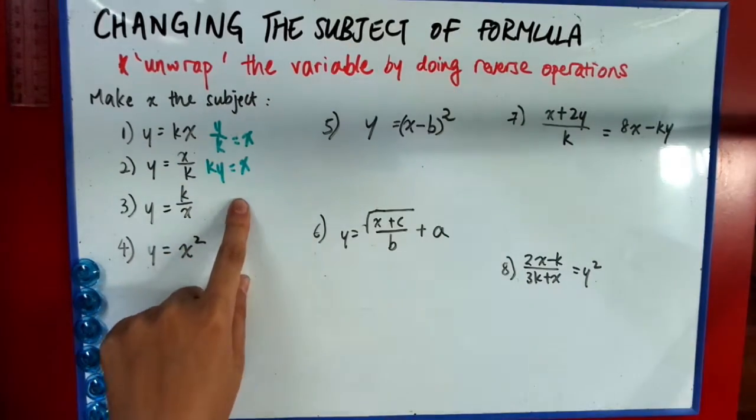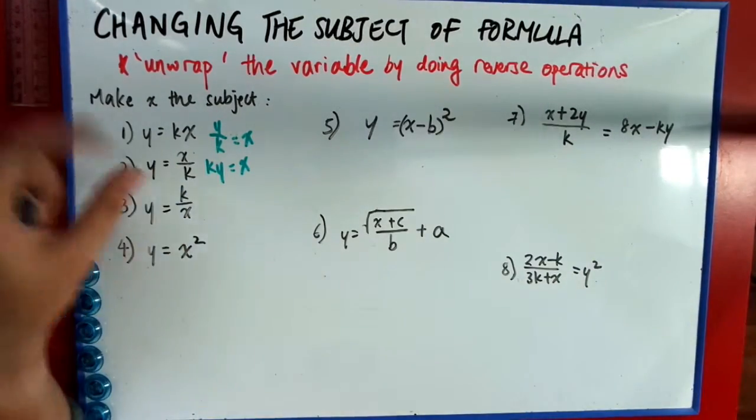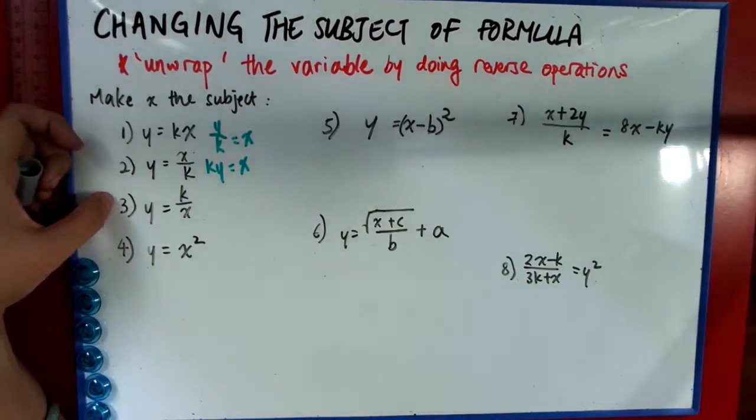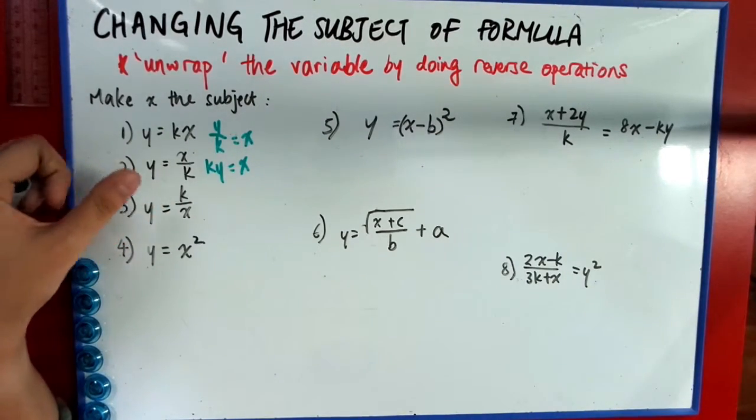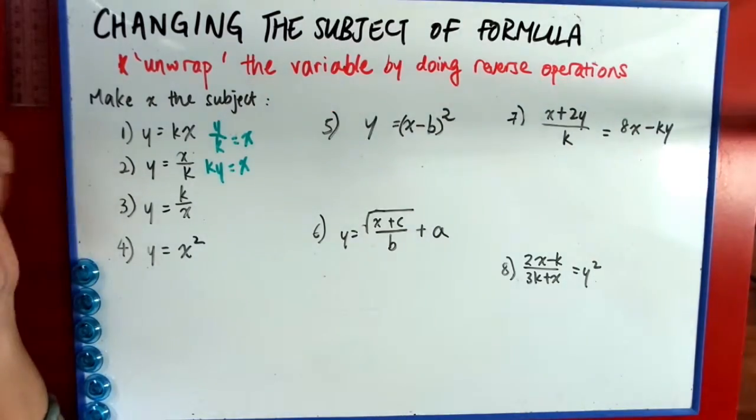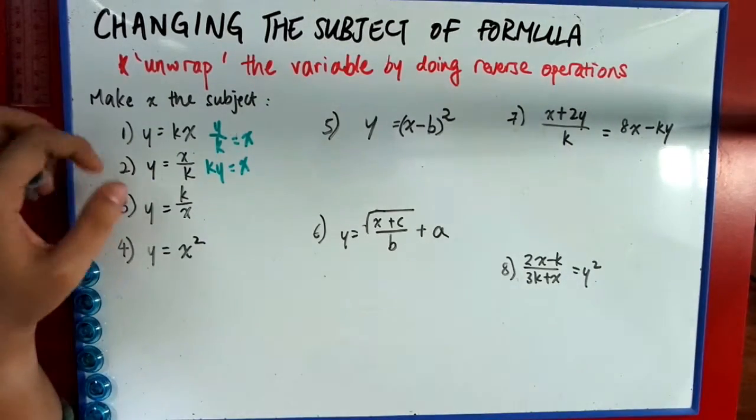For example 2, it's simple, you just multiply by k. So ky equals x. Of course, in the correct answer, you should make x in front. But it's still the same. Now for example 3, you have a little bit of a problem here. Some of you may find it a problem, some of you won't. It's actually very easy.